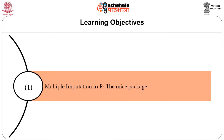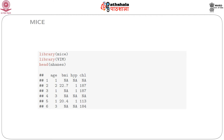The objective here is to see how we can implement multiple imputation in R. To implement multiple imputation in R, we need two packages: the mice package and the VIM package. The VIM package is needed for the graphics that we would be generating. We would be using a dataset called 'enhance', which is in the library mice. To get details of this dataset, one can use the command: ?enhance.